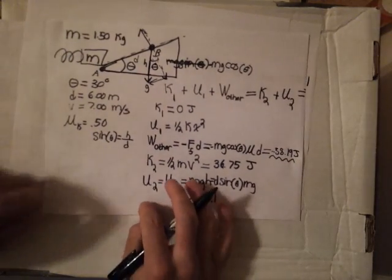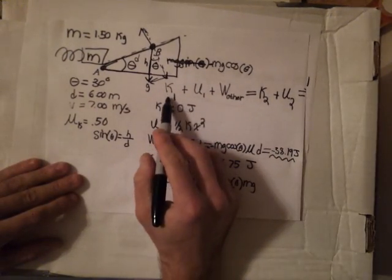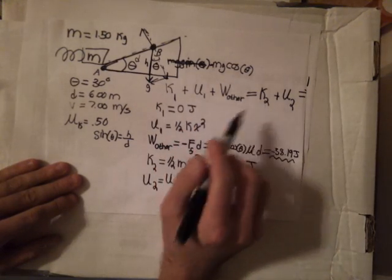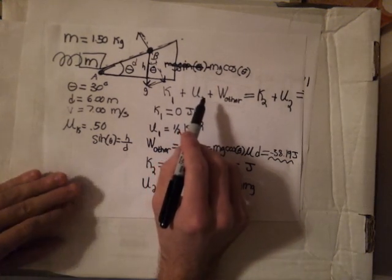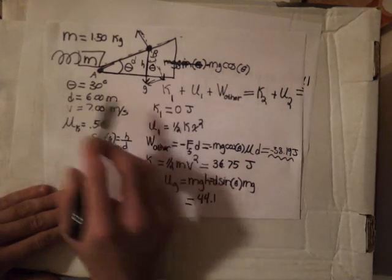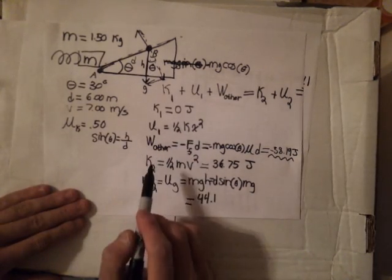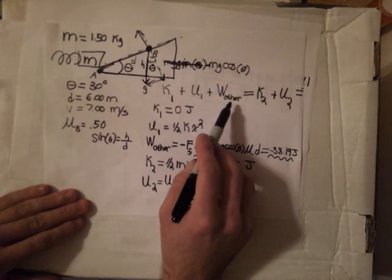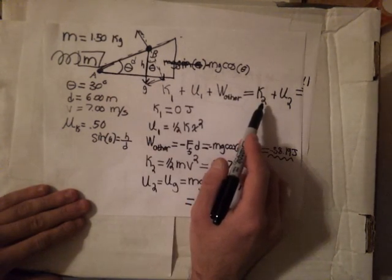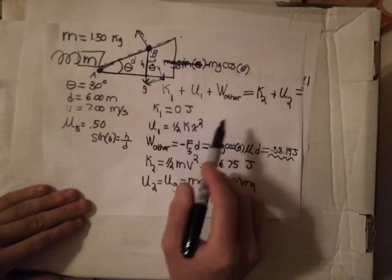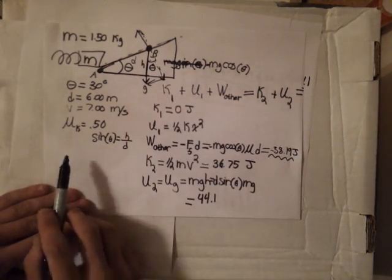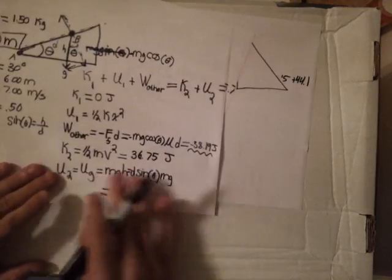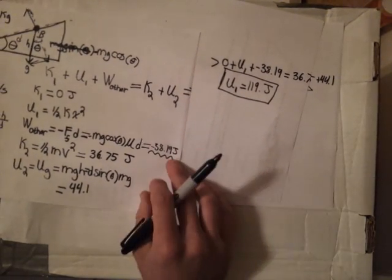To recap: we wrote out the work-energy theorem in its most general form and evaluated each term. KE1 was zero; PE1 was what we were looking for (equal to one-half kx squared by Hooke's law, but we just needed the total value). Work other was the non-conservative friction force. KE2 used the given velocity at point B. PE2 was gravitational potential energy found via trigonometry. Plugging everything in gave us our final answer of 119 joules.